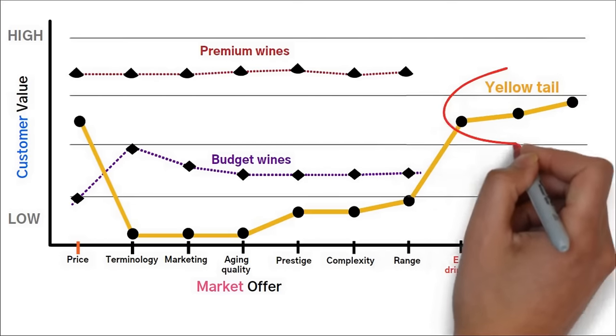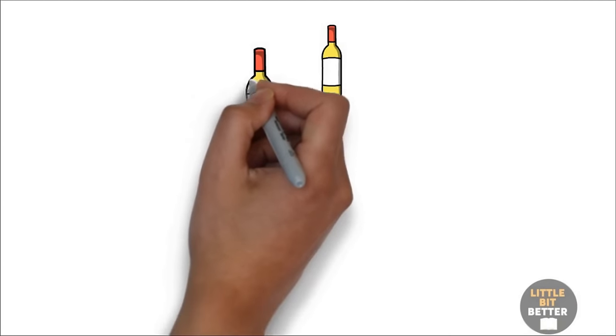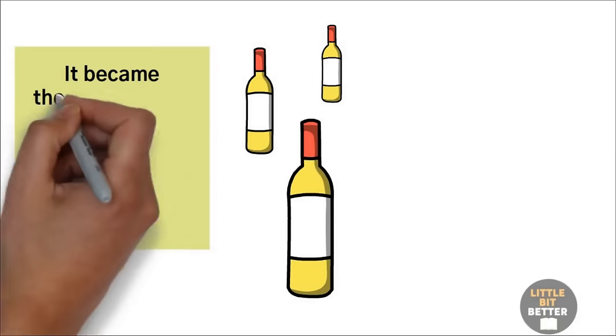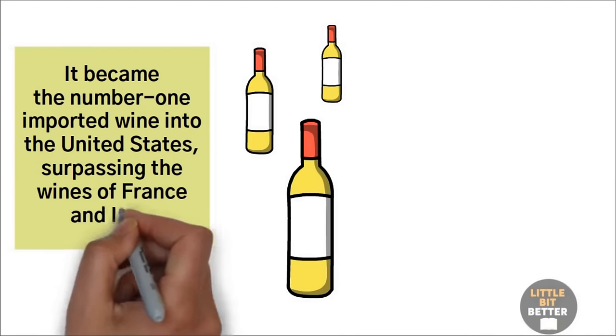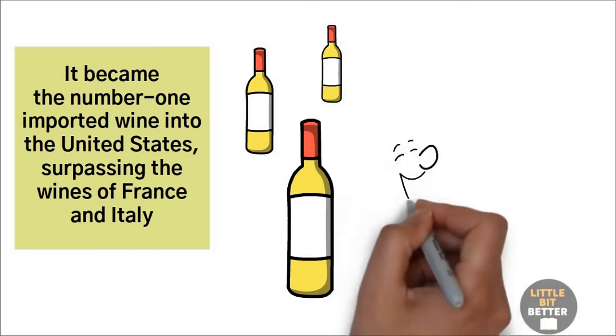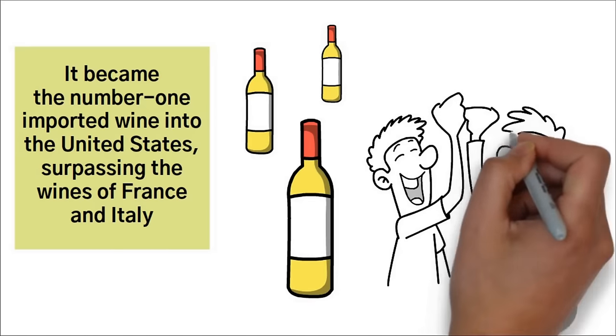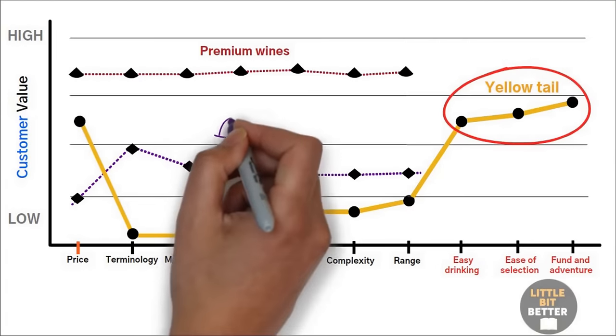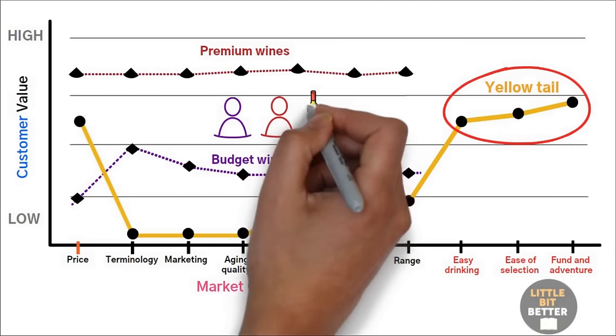The result is that Yellowtail appeared to a broad group of alcoholic beverage consumers. In just two years, Yellowtail emerged as the fastest-growing brand in history of both the Australian and the U.S. wine industries. It became the number one imported wine into the United States, surpassing the wines of France and Italy. What's more, Yellowtail didn't just steal sales from competitors. It grew the market. The wine brought non-wine drinkers into the wine market. Novice wine drinkers started to drink wine more frequently. Budget wine drinkers moved up, and drinkers of more expensive wines moved down to become consumers of Yellowtail.